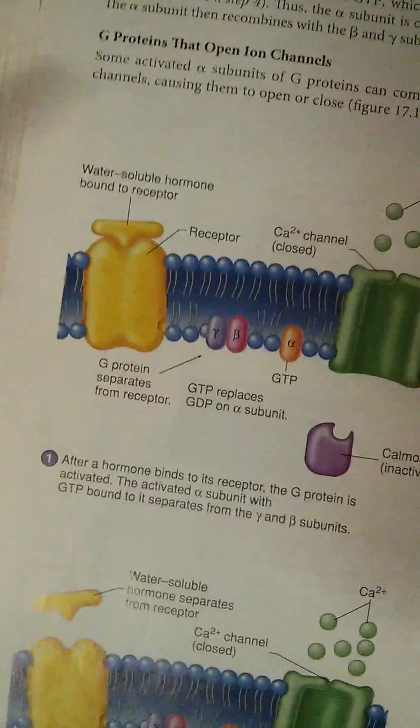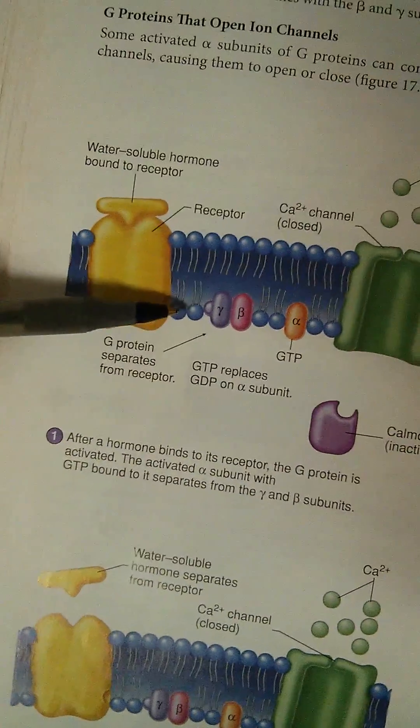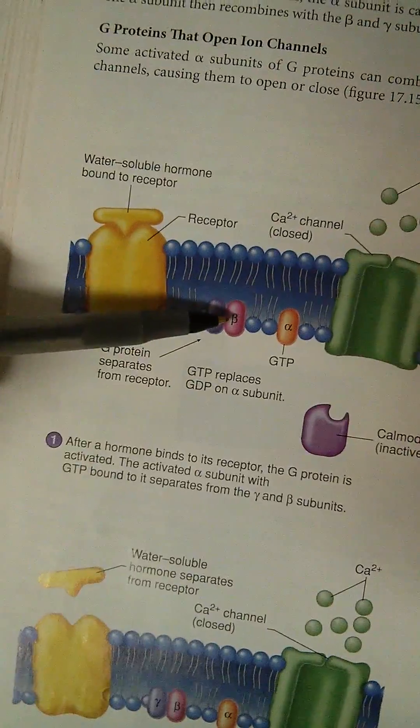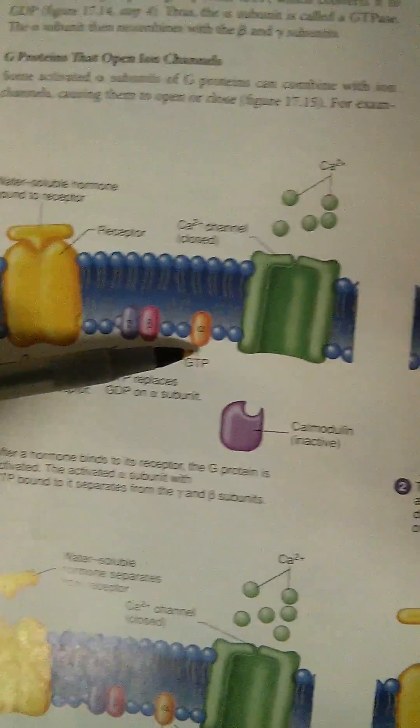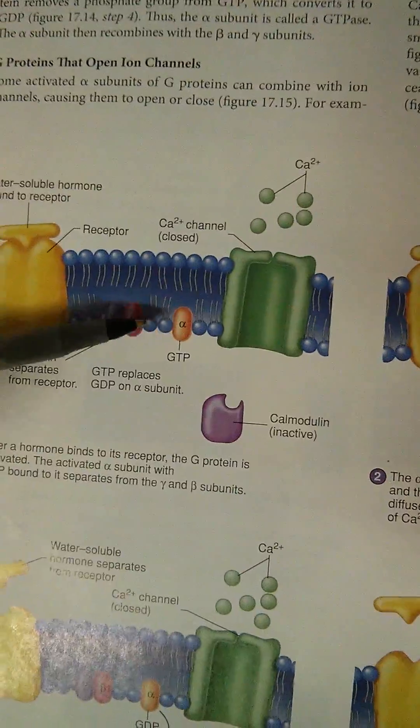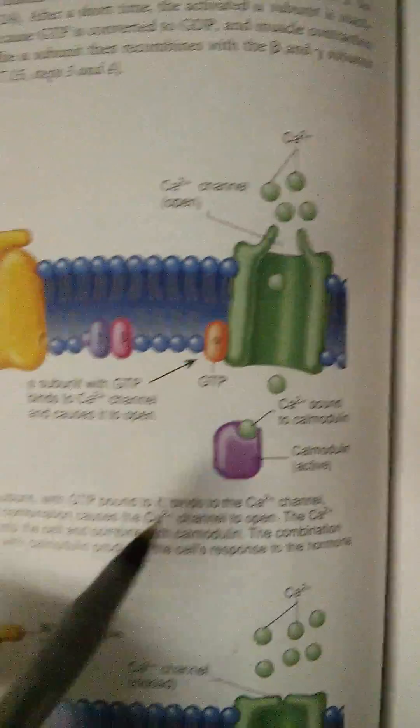Okay, so again, we have the water-soluble hormone binding to the receptor. It activated the G-protein, so it went from GDP to GTP because it gained an energy. Now, the alpha is going to go off alone, A for alone, and it's going to stimulate this channel by binding to it. So here, it bound to the channel,